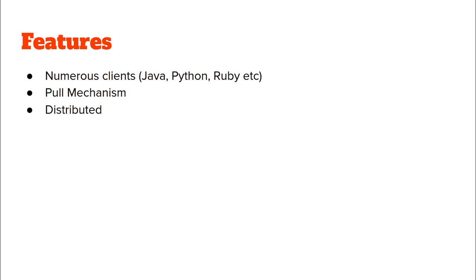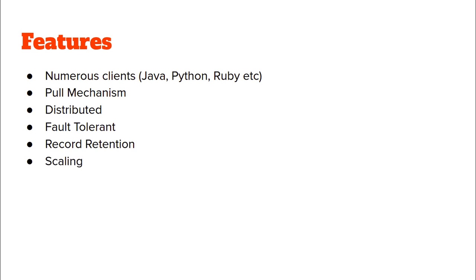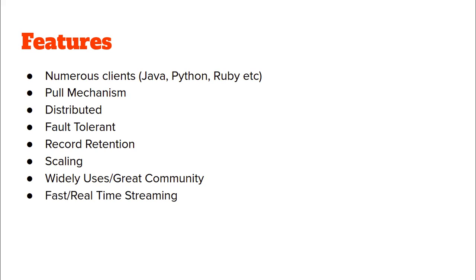Kafka is a distributed system, which has its own advantages such as fault tolerance and good scaling. Kafka also provides record retention, as opposed to many messaging queues where there is no record retention once a record has been consumed. This retention policy can be set by us for as long as we want. Kafka has a wide variety of users and a great community, and it provides very fast and real-time streaming.